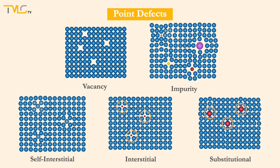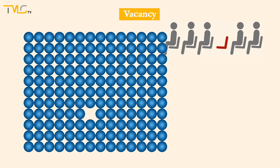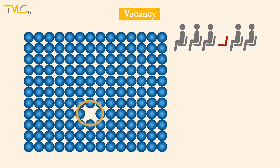Impurities can be interstitial or substitutional, depending on the size of impurity atoms. A crystal having a vacancy, as the name signals, is missing at least one atom from the lattice site that was supposed to have an atom. Vacancies can be seen in all crystalline materials. Increasing temperature promotes vacancy formation, so we can say that number of vacancies exponentially increase with the increasing absolute temperature.